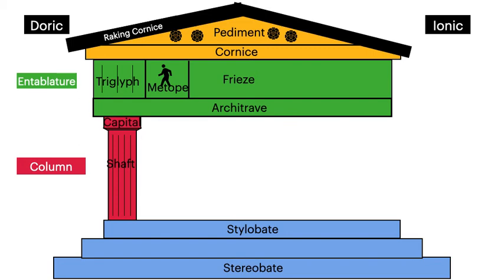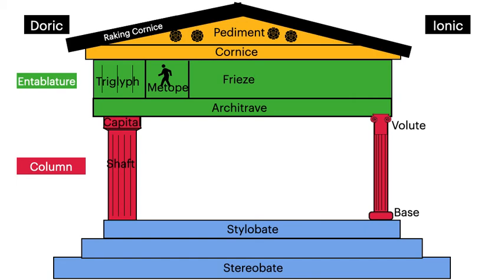Now we're going to compare the Ionic order to the Doric one. We've got the same base with the stereobate and the stylobate, and then we have our column. Notice how an Ionic column has a separate base — a wider bit at the base to give stability because the shaft of the column is much more narrow and fine. It then has a capital with spirals on it, and those spirals are referred to as volutes. So it's a lot more ornate and refined than the simple Doric style. Another key difference is the frieze: in an Ionic temple we don't have alternating triglyphs and metopes — instead we just have one continuous frieze all the way along, making one continuous picture rather than alternating sections. The cornice and the pediment are still the same as the Doric temple.